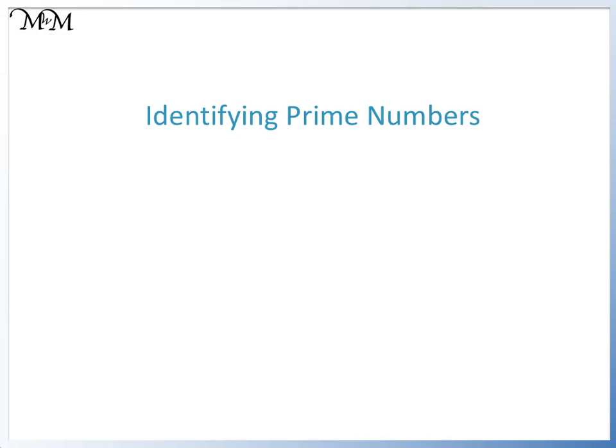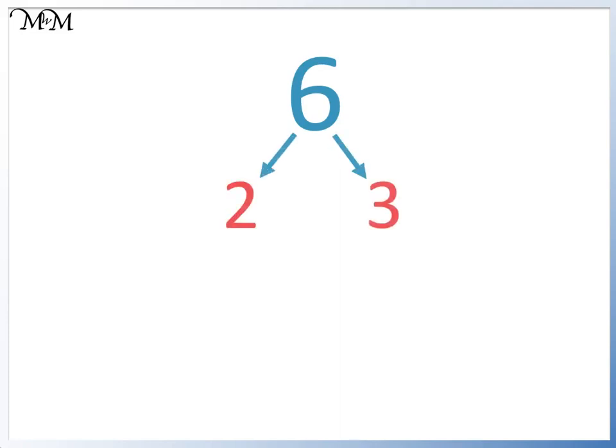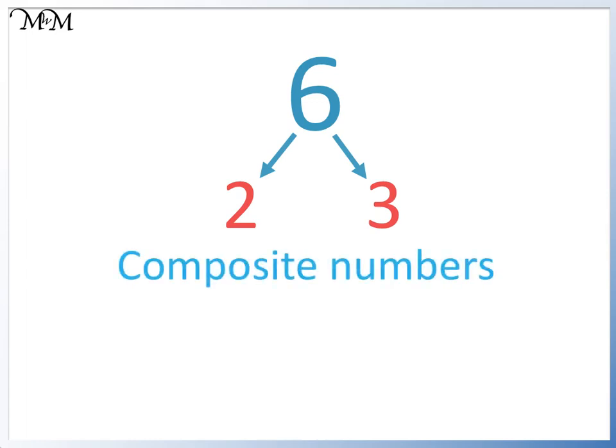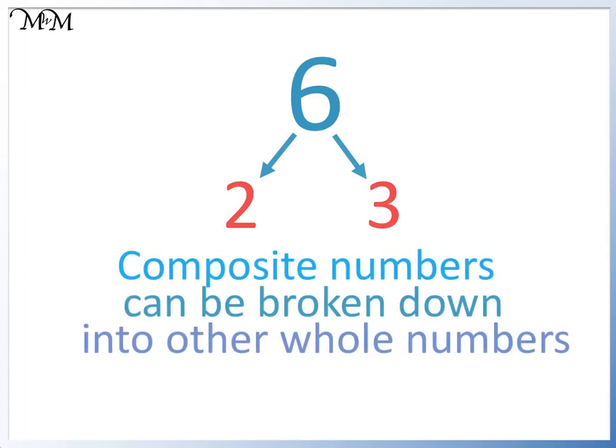Hi and welcome to our lesson on identifying prime numbers. Here is 6. It can be broken down into 2 times 3. 6 is in the 2 and the 3 times tables. Because it is composed of the numbers 2 and 3, it can be called a composite number. Composite numbers can be broken down into other whole numbers. Not all numbers can do this.